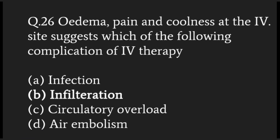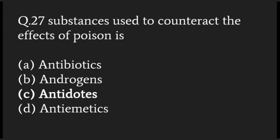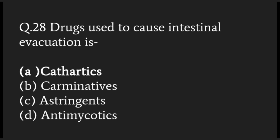Edema, pain, and coolness of the IV site suggest infiltration of fluid into the surrounding tissue. The substance used to counteract the effect of poison is called an antidote. The drug used to cause intestinal evacuation is called a cathartic.